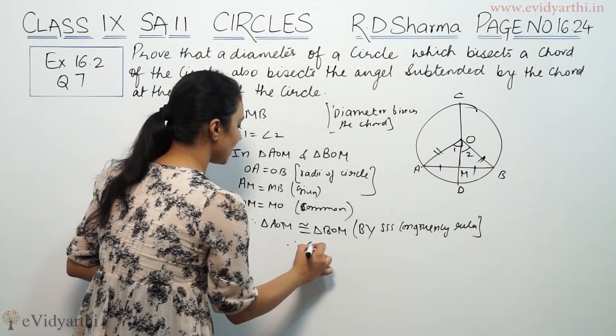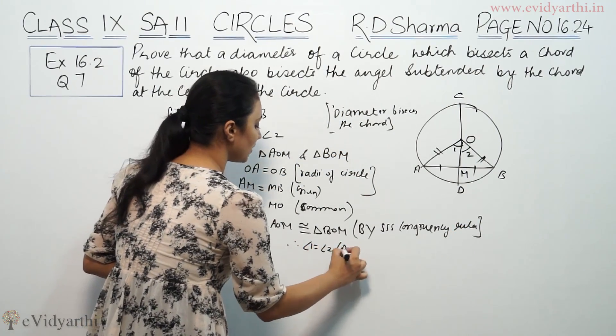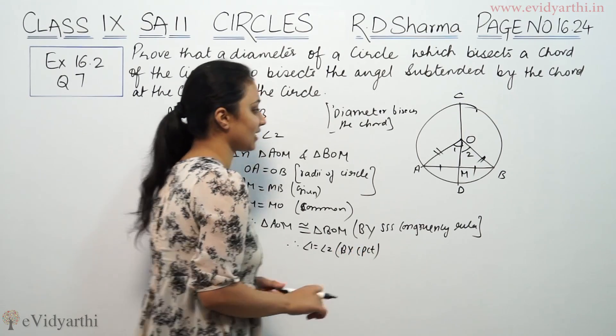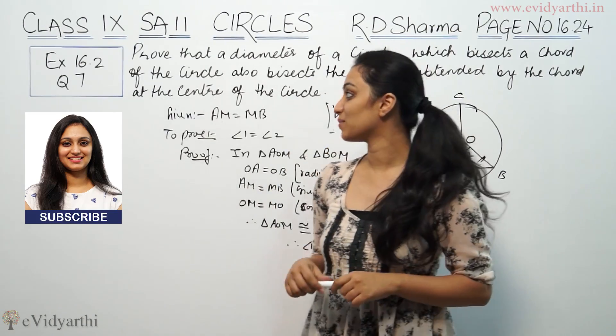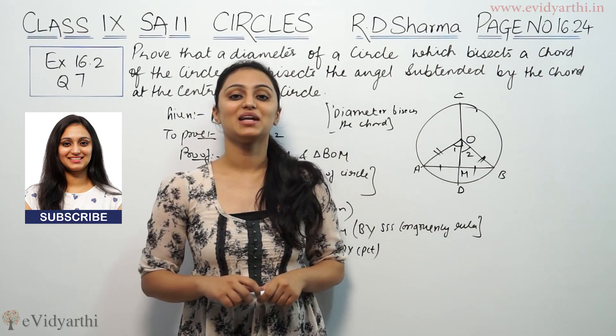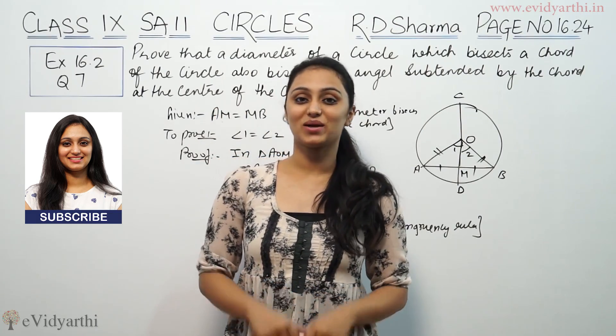Therefore, we can say angle 1 equals angle 2 by CPCT. So this was question number 7 from RD Sharma. I will post the next video for some more questions. Bye bye!